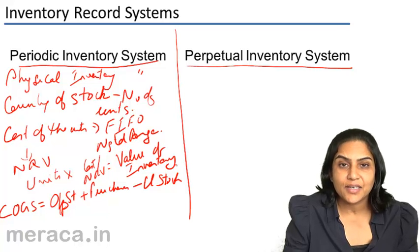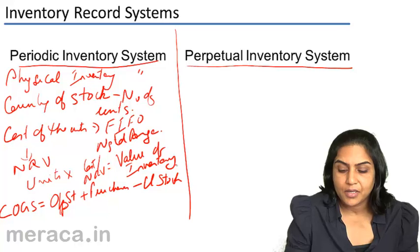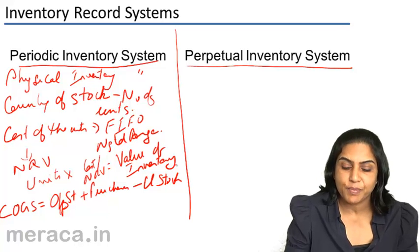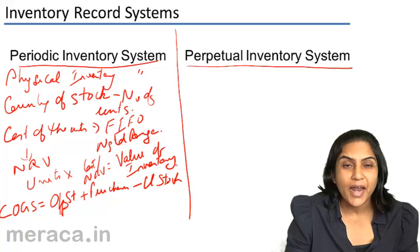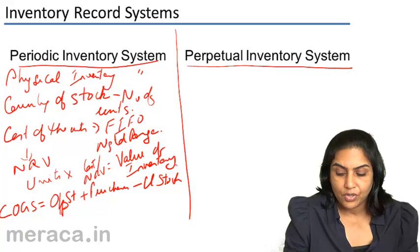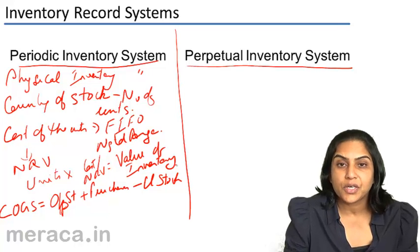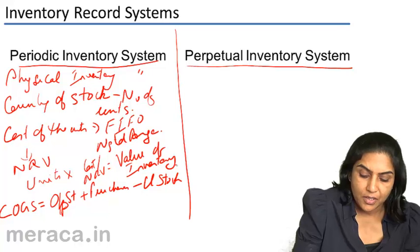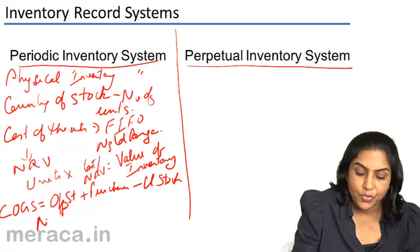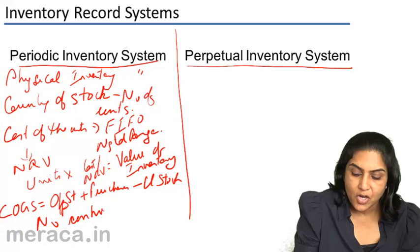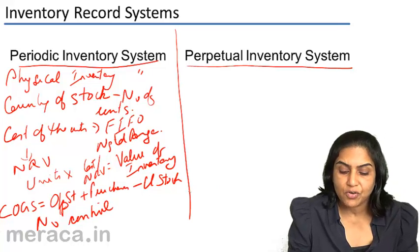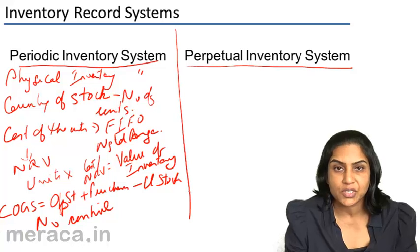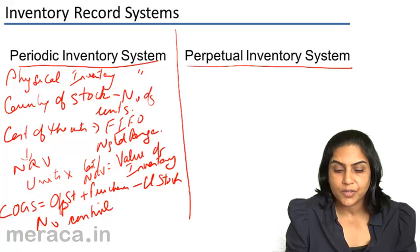This is the periodic inventory system. Though this method is simple and inexpensive, there is not adequate control maintained over the units of inventory, since cost of goods sold is just a function of opening stock plus purchases minus closing stock.